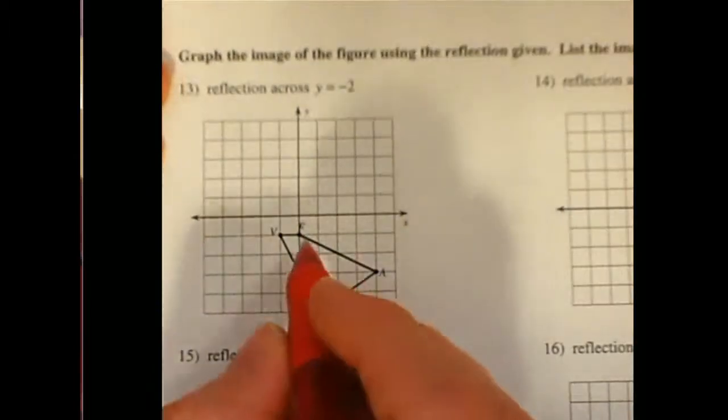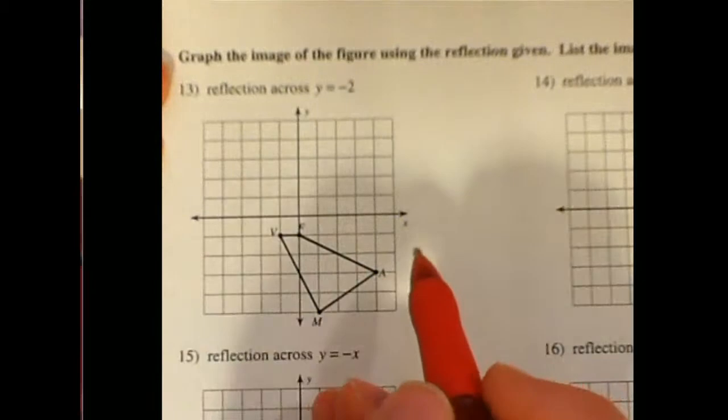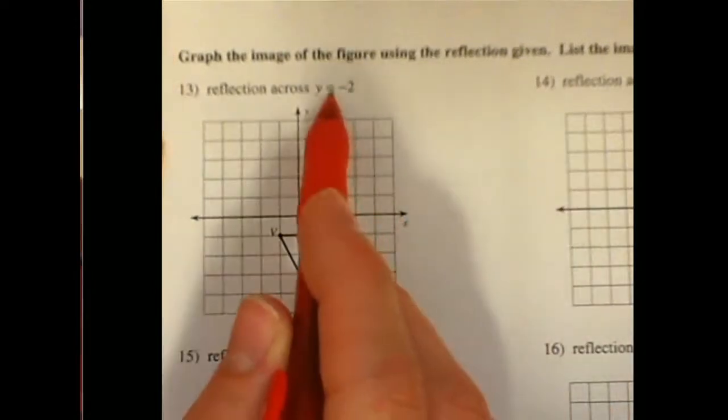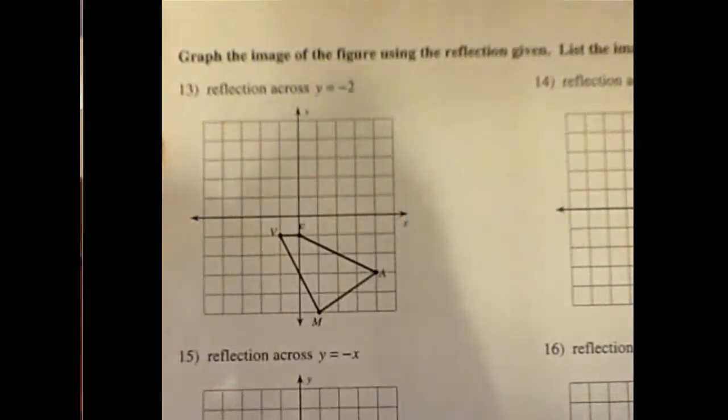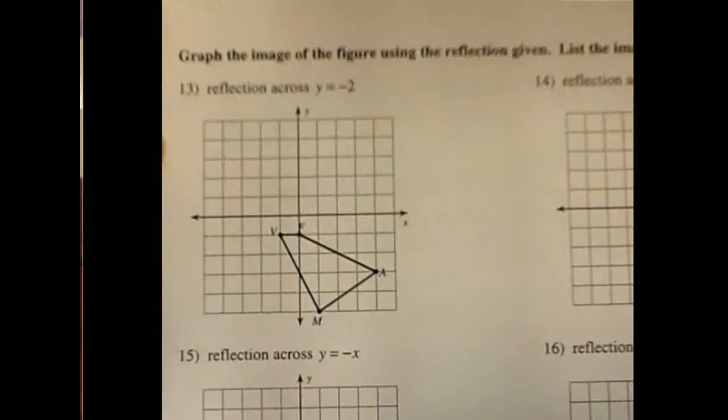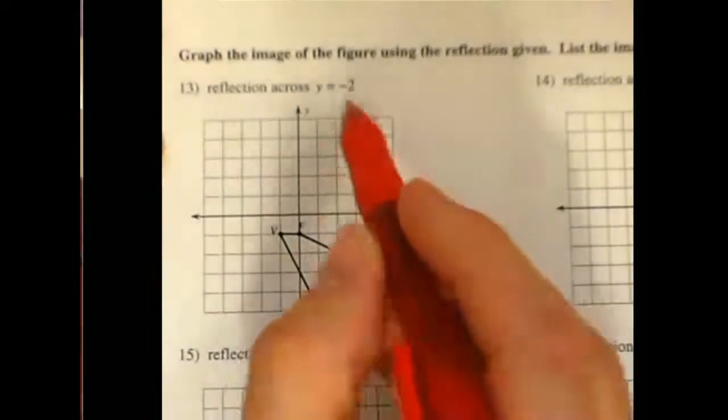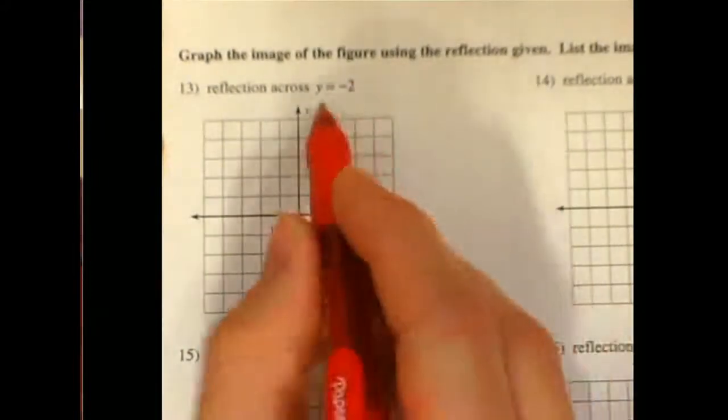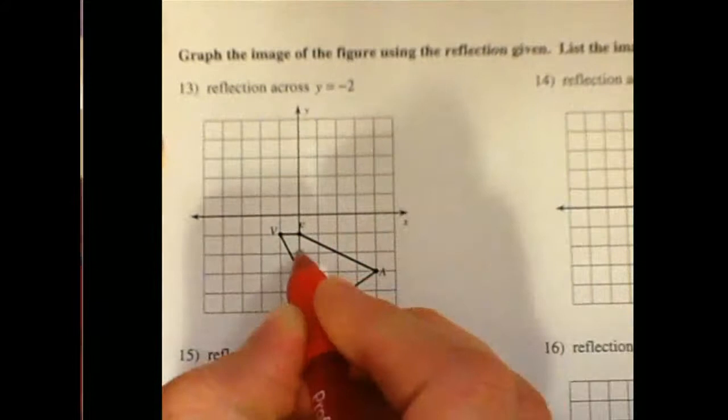And to work with that, we need to know where y equals negative 2 is. Now, when there's no x present, we know that we're looking at either a horizontal or vertical line. In this case, since we are told what y is, we know how high the line is.